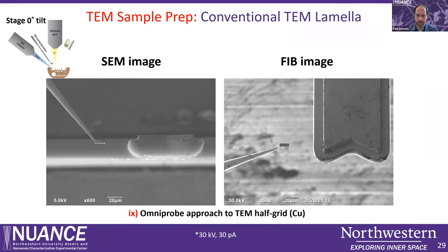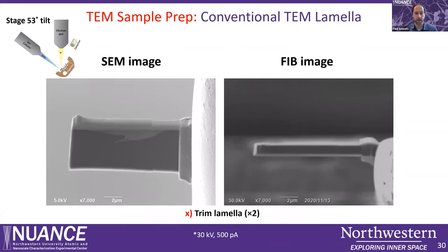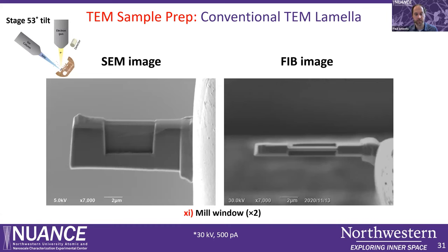I like to mount it on the side of a post as a flag. We use the GIS system to deposit a little bit of platinum to adhere the sample at lower currents. Then we tilt the sample perpendicular to the ion beam — 53 degrees for the 4700 system — and trim the lamella at milder currents initially. We then mill out a specific window. For this, you need to know how deep your gallium beam penetrates into the sample, which requires knowledge of your sample and some experimental practice.